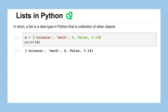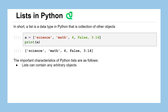For example, on the screen I've made a simple list called A, assigned to be the list that contains the string 'science', the string 'math', the number 4, the Boolean False, and the float 3.14. Notice how I constructed that list: it's a square bracket on the left and a square bracket on the right, and the elements in that list are separated by commas. When you print out that list, it shows you all of the elements inside of it. There are a lot of important characteristics of lists, and we're going to dig a little bit deeper into some of these to see why they're so important.